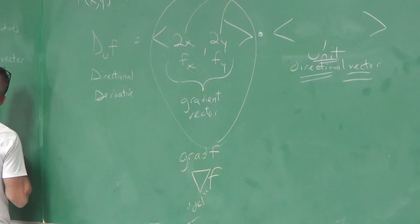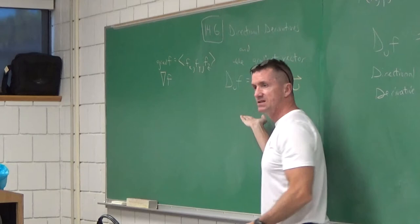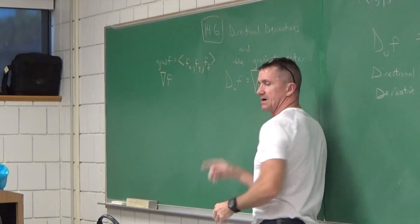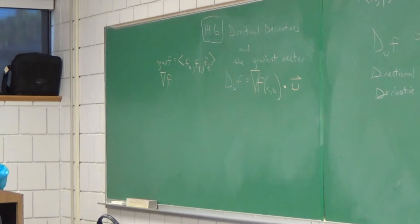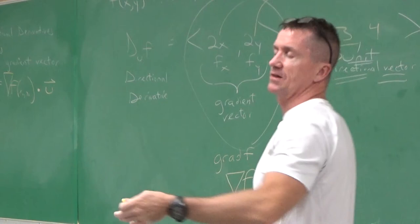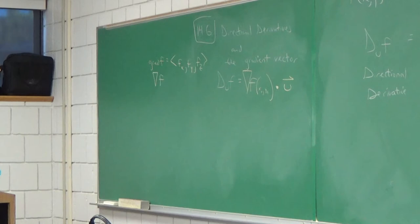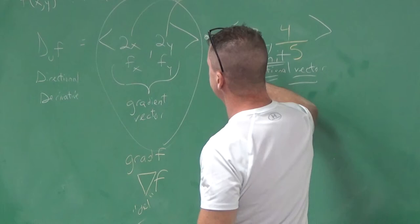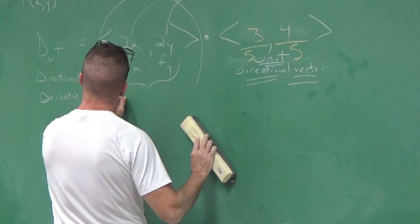The notation is del f · u — which looks like a curse word, but that's an easy way to remember it. The vector (3, 4) is not a unit vector, so we divide by its magnitude. The square root of 3² + 4² is 5, so the unit vector is (3/5, 4/5). Now dot (2, 4) with (3/5, 4/5): 2 × 3/5 is 6/5, plus 4 × 4/5 is 16/5, giving 22/5.